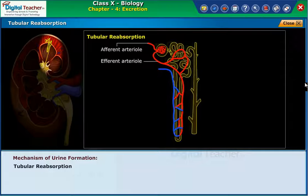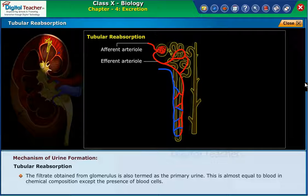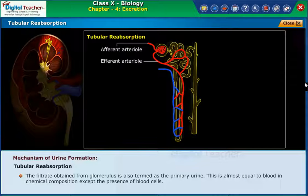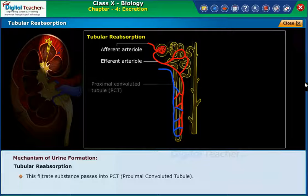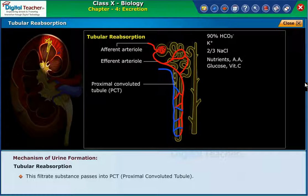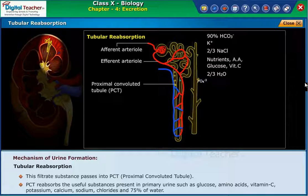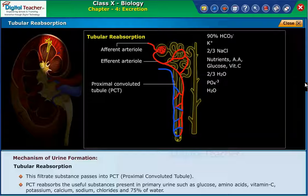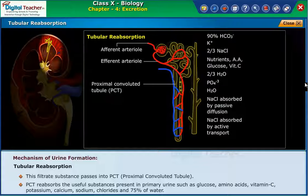Tubular reabsorption. The filtrate obtained from the glomerulus is also termed as the primary urine. This is almost equal to blood in chemical composition except for the presence of blood cells. This filtrate passes into the PCT, proximal convoluted tubule. PCT reabsorbs the useful substances present in primary urine such as glucose, amino acids, vitamin C, potassium, calcium, sodium, chlorides, and 75% of water.